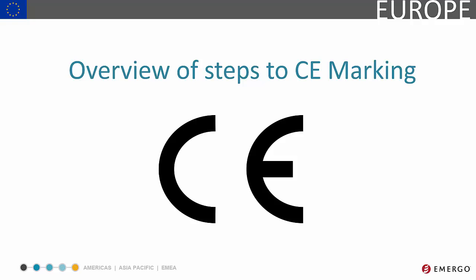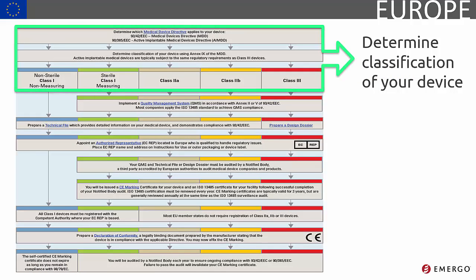The entire process of bringing your medical device to market in the EU can be summed up in about eight steps, all of which are covered in later modules within this course. It's very important to note that some of these steps happen simultaneously or not at all depending on various factors. Assuming you know which directive applies to your device, the first step is to determine device classification. Once you've determined classification, you'll know the steps required to CE marking.